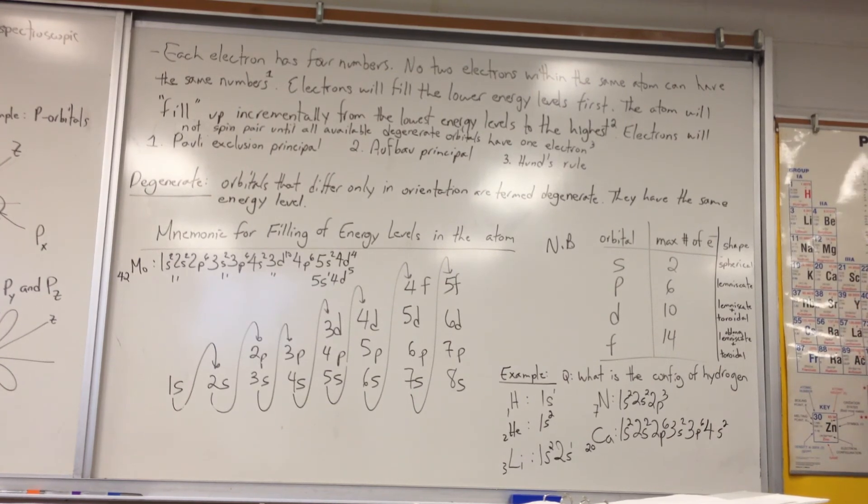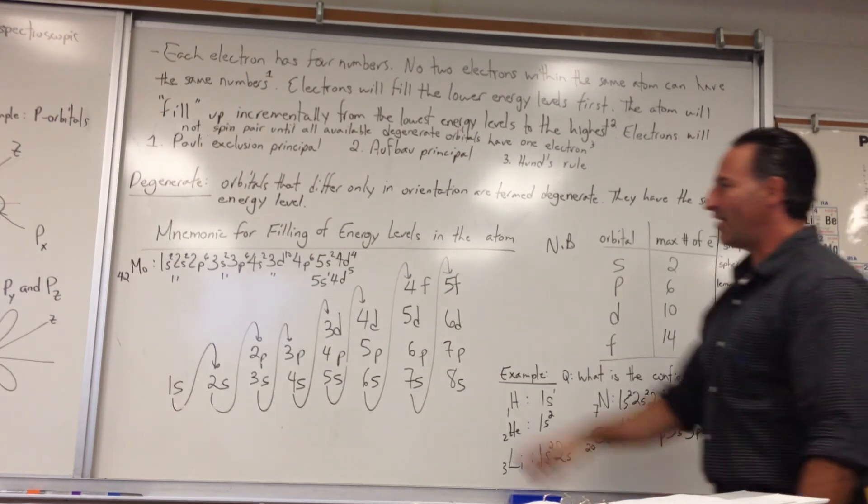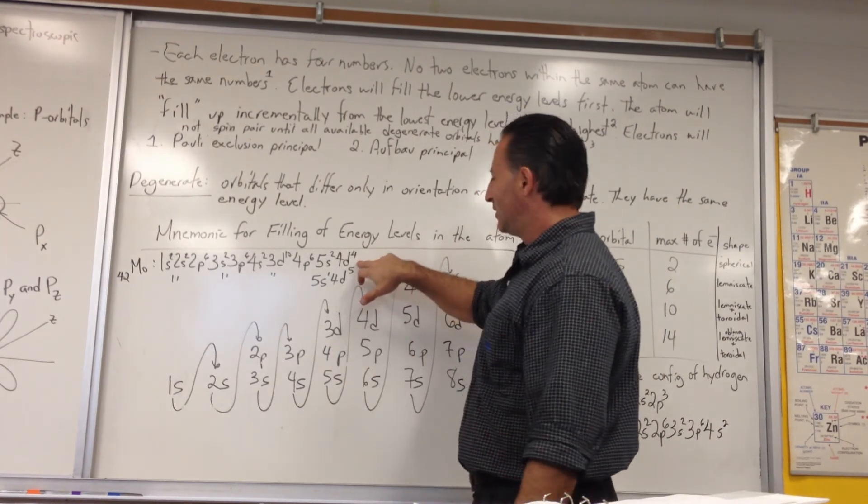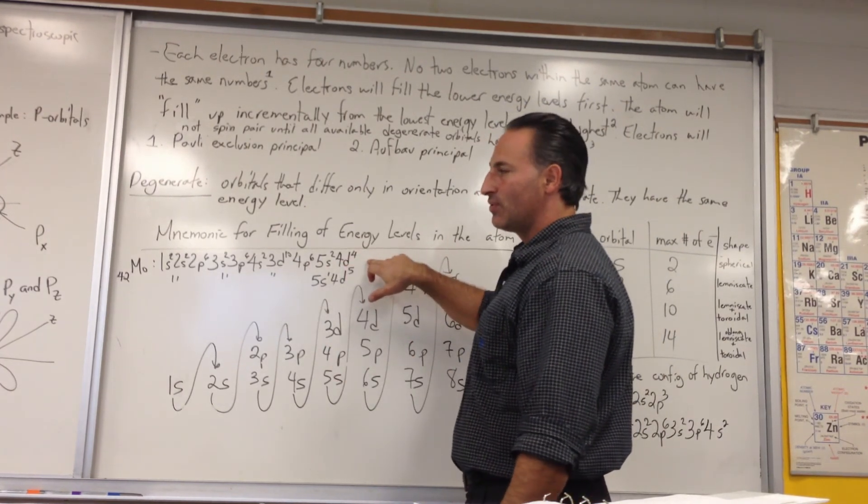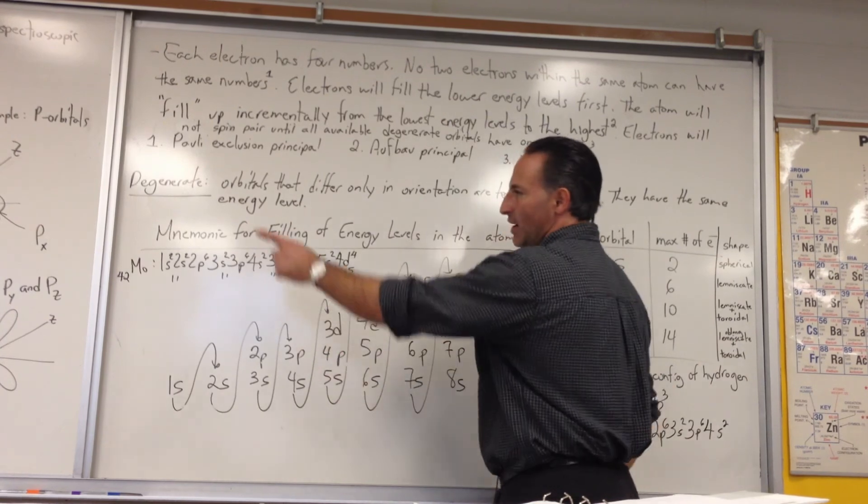So we're going to say 1, 2, 3, 4. It should be D4. 5S2, 4D4. In fact, it's not 5S2, 4D4, because what happens is, as I said earlier, sometimes atoms prefer to have half-filled shells.